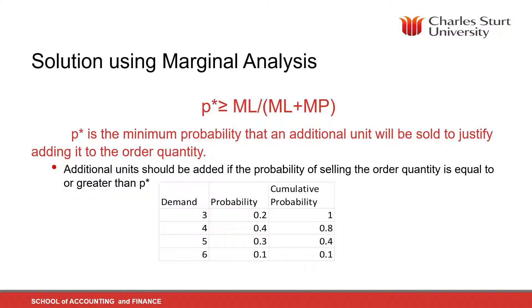We can also solve this using marginal analysis. Marginal analysis is usually used when you've got a lot of different states and a lot of possibilities — quite a large matrix, not the simple one that we've got here. Vic does an example with a larger possibility selection in the topic notes. You can find the proof of the formula that we're going to use here on page 228 of the text and in the topic notes.